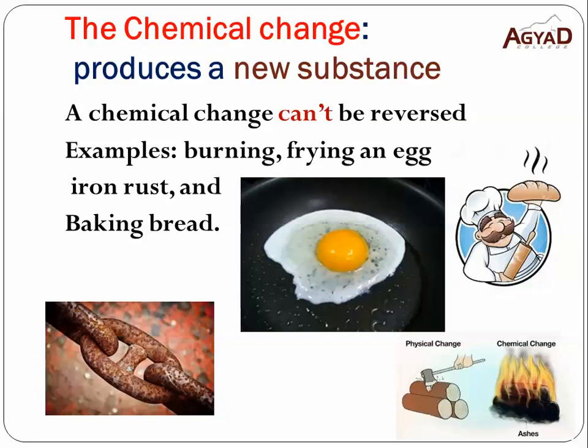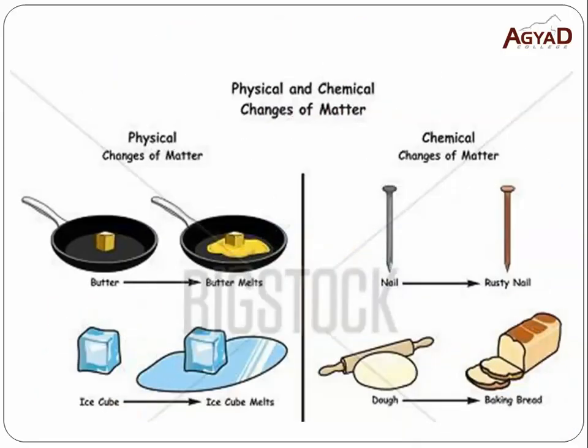The chemical change can't be reversed. You can't reverse a fried egg back into an egg — this can't happen. So the chemical change can't be reversed. From the picture in front of you, can you give me examples of physical and chemical changes? Think and answer.